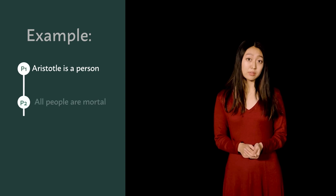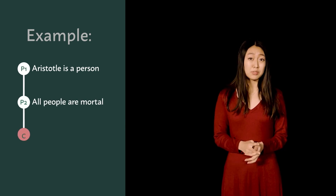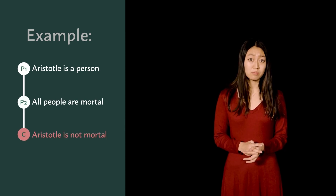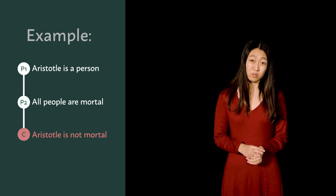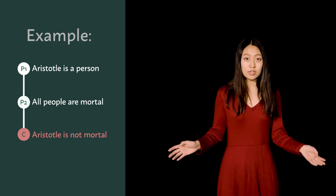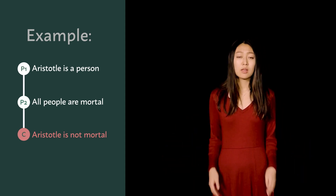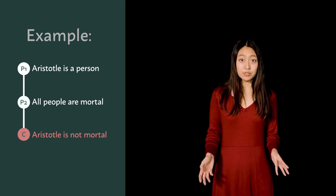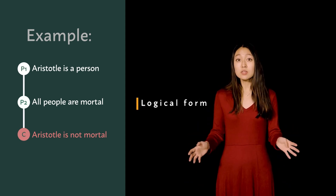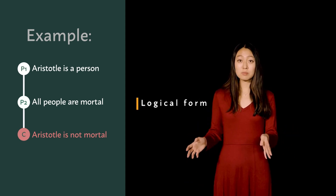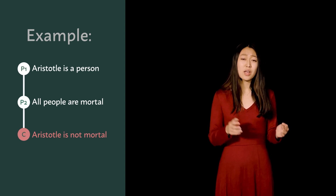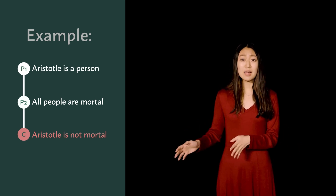For example, consider the following set of sentences. Premise one: Aristotle is a person. Premise two: all people are mortal. Conclusion: Aristotle is not mortal. In this exchange, you probably have an intuition that something has gone wrong. This is where we introduce the notion of a logical form — we can study these forms to determine which lead to good conclusions and which lead to bad conclusions.